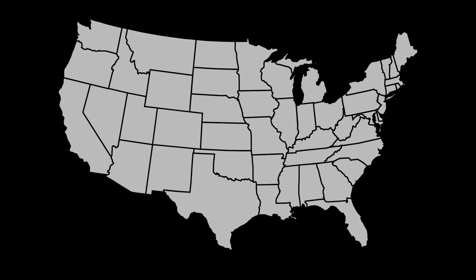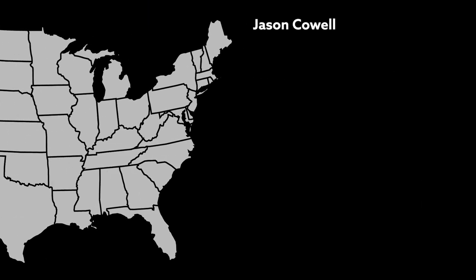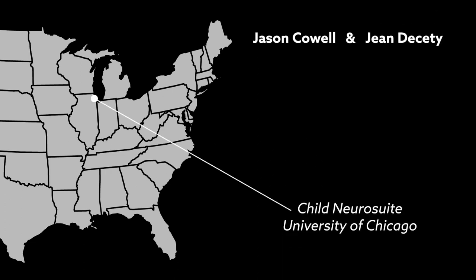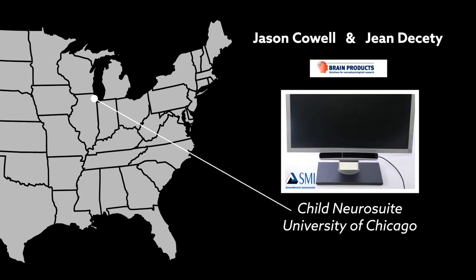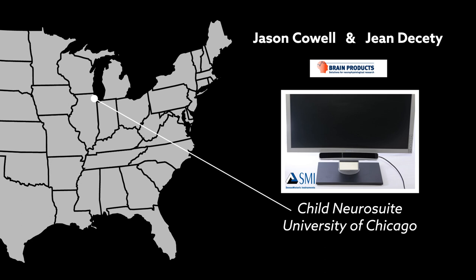In a recent study, developmental neuroscientists Jason Cowell and Jean Desetie from the Child Neurosuite at the University of Chicago used electroencephalography, eye tracking, and behavioral sharing to examine how brain activity is related to moral judgments.